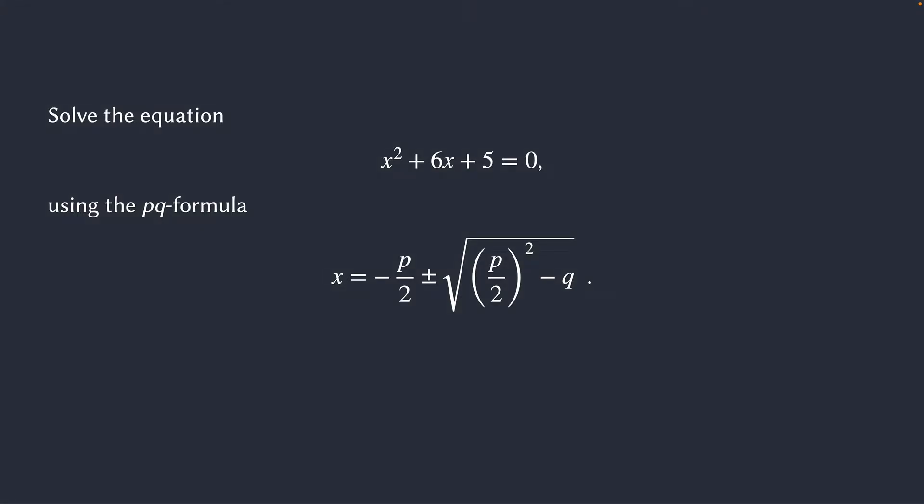We are being asked to solve this conditional equation, x squared plus 6x plus 5 is equal to 0, which means we're trying to find the values of x that make this equation true. And we're going to do so using the PQ formula.